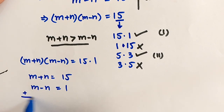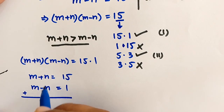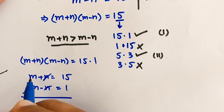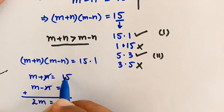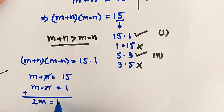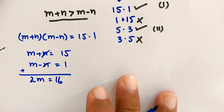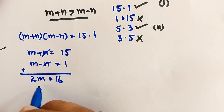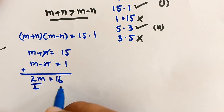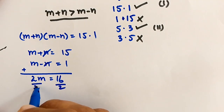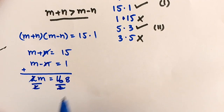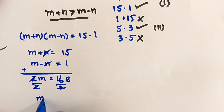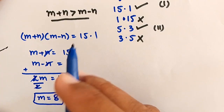To find m, we add the two equations. The n terms cancel: m+m = 2m, and 15+1 = 16, so 2m = 16. Dividing both sides by 2 gives m = 8.